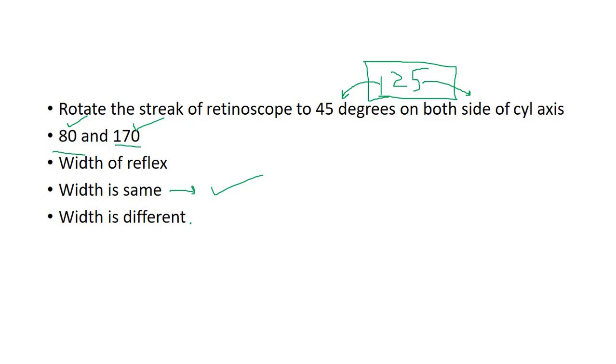But if the width is different, it means that 125 axis of the cylinder is not correct. In this case, you have to move towards the streak which is narrow.